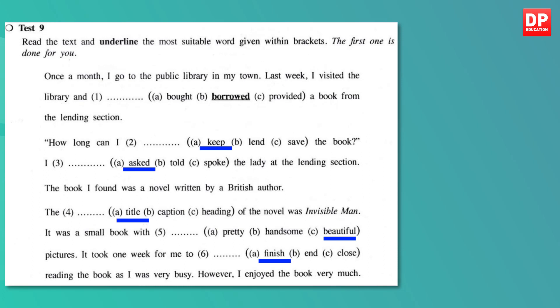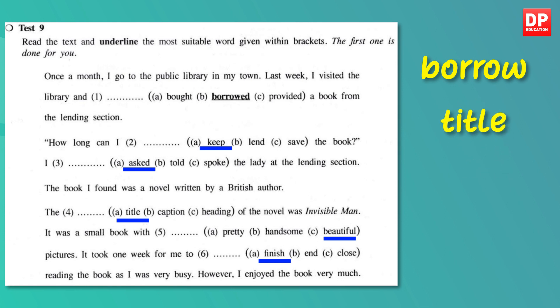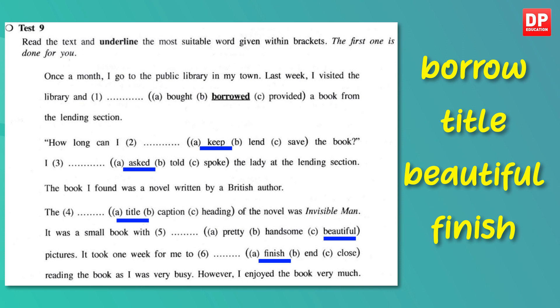We always go to the library to borrow books. We lend a book to someone if that person wants to borrow from us. The name of the book is known as the title. You would also notice that the book has pictures — the adjective used to describe these pictures is 'beautiful'; we don't call them 'handsome' or 'pretty' pictures. Also, we finish reading a book; we cannot say we 'end' the book, nor can we say we 'close' the book when we mean we finished reading it.